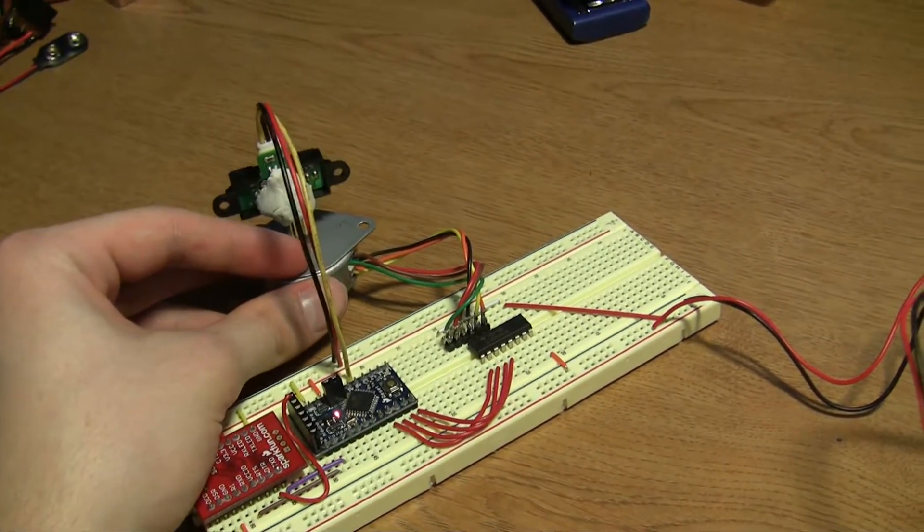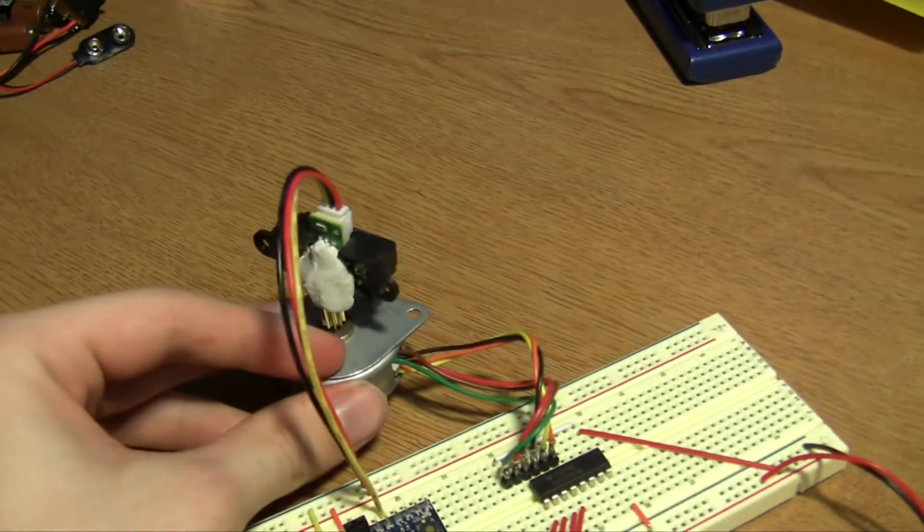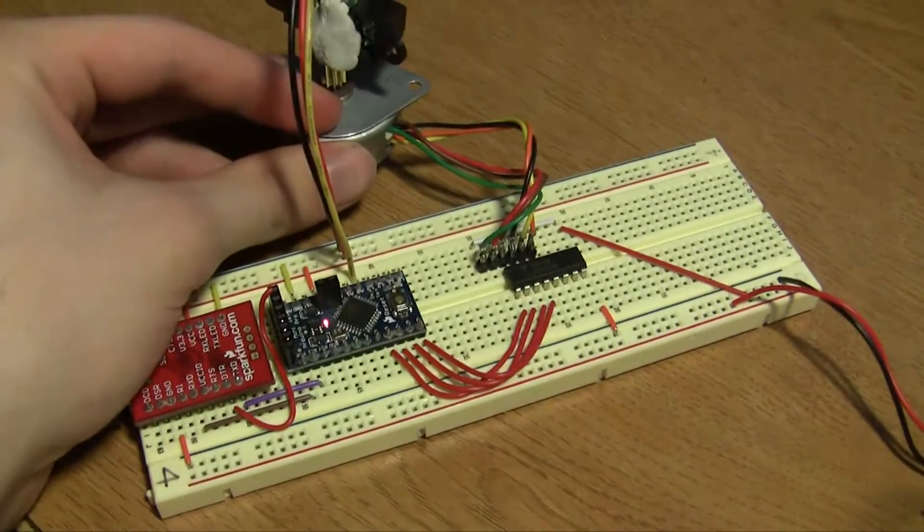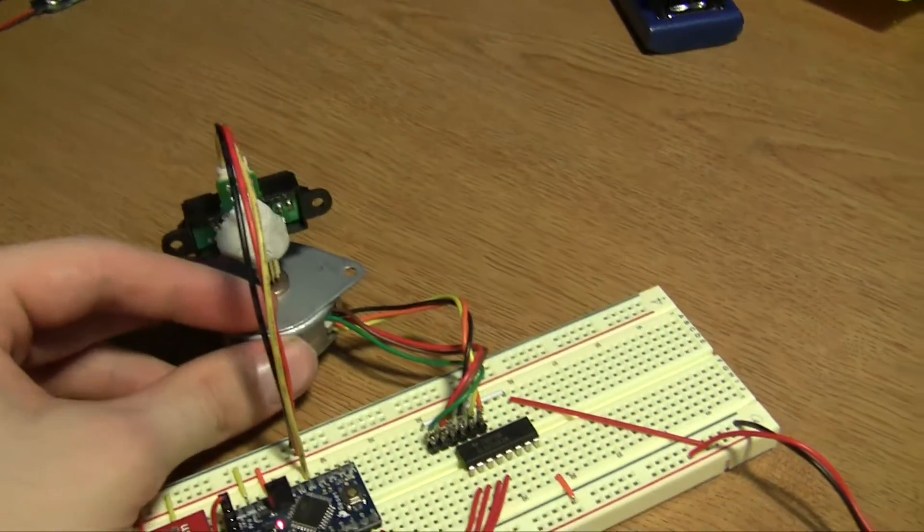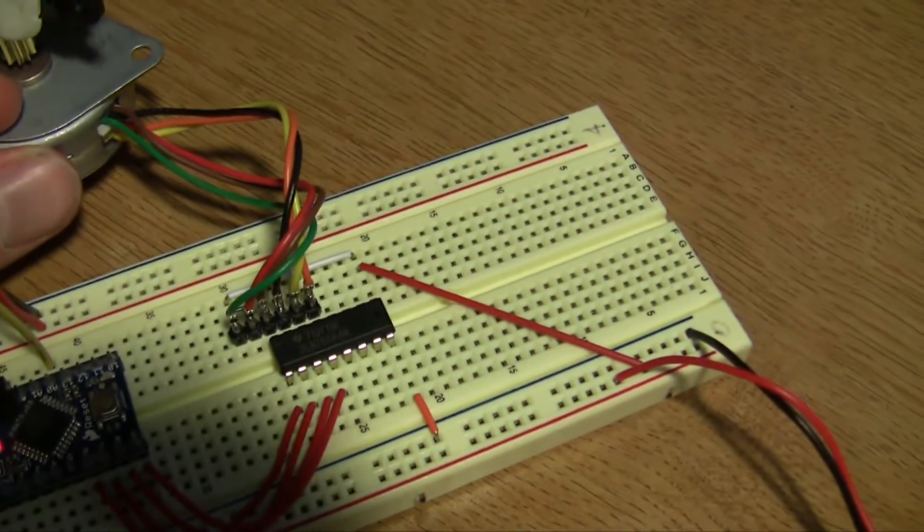This is a LiDAR type system using an infrared transmitter and receiver distance sensor feeding values into the Arduino. It's moving on a stepper motor controlled by a Darlington transistor array and powered by a 9-volt battery.